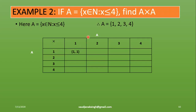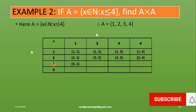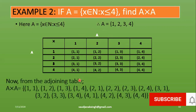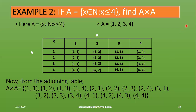The first element is taken from the left and the second from the top. So we get ordered pairs: (1,1), (1,2), (1,3), (1,4), (2,1), (2,2), (2,3), (2,4), (3,1), (3,2), (3,3), (3,4), (4,1), (4,2), (4,3), and (4,4). All ordered pairs are arranged and enclosed in curly brackets, giving A cross A. Here both sets are equal, so the result is A cross A.